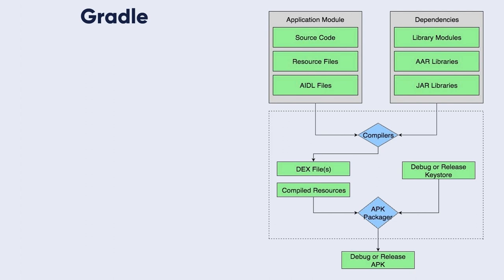The Android plugin for Gradle works with the Android build toolkit to provide processes and configurable settings specific to building and testing Android applications. Gradle and the Android plugin run independently of Android Studio, meaning you can build your Android apps from within Android Studio, from the command line, or on machines where Android Studio is not installed.